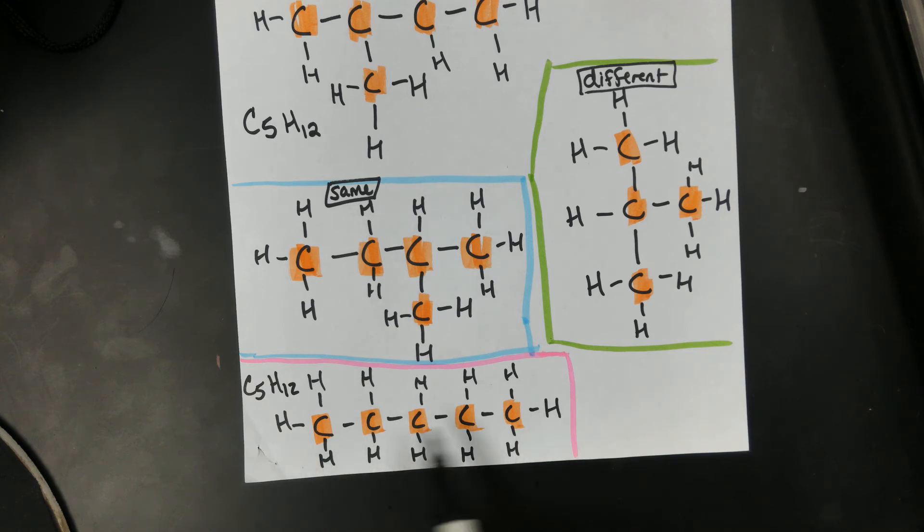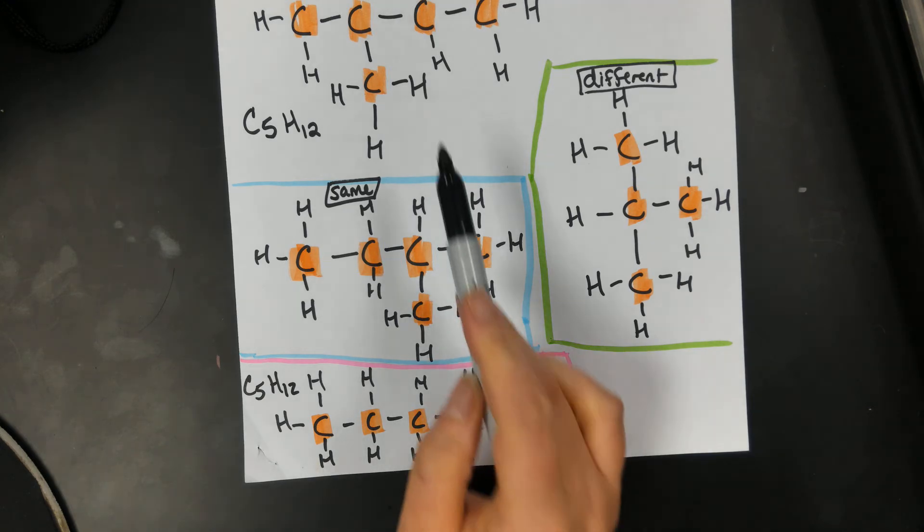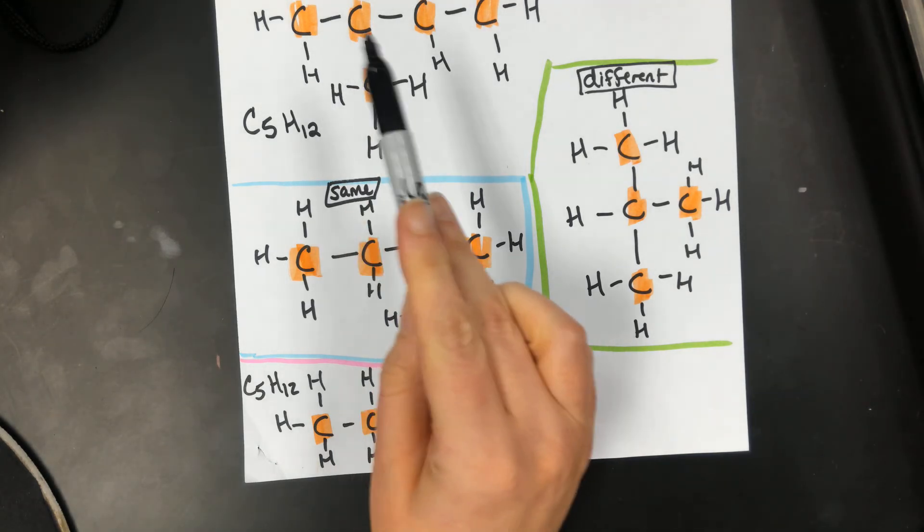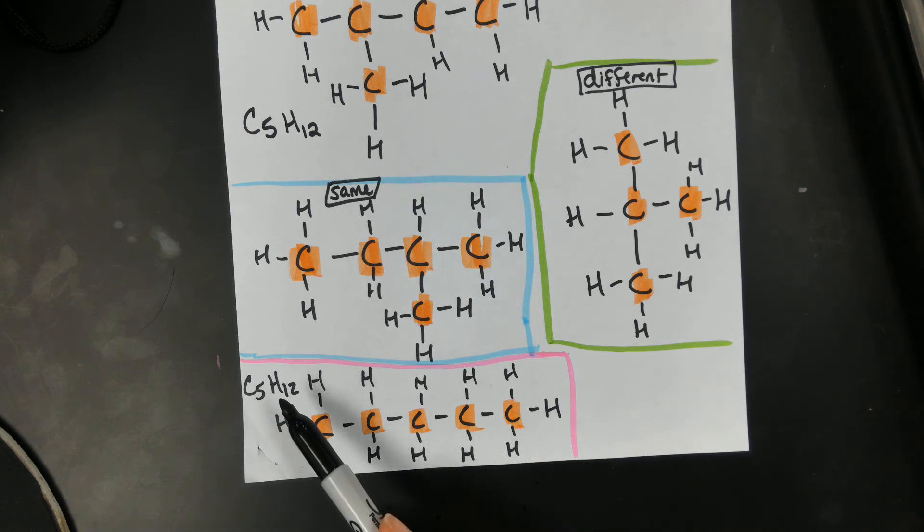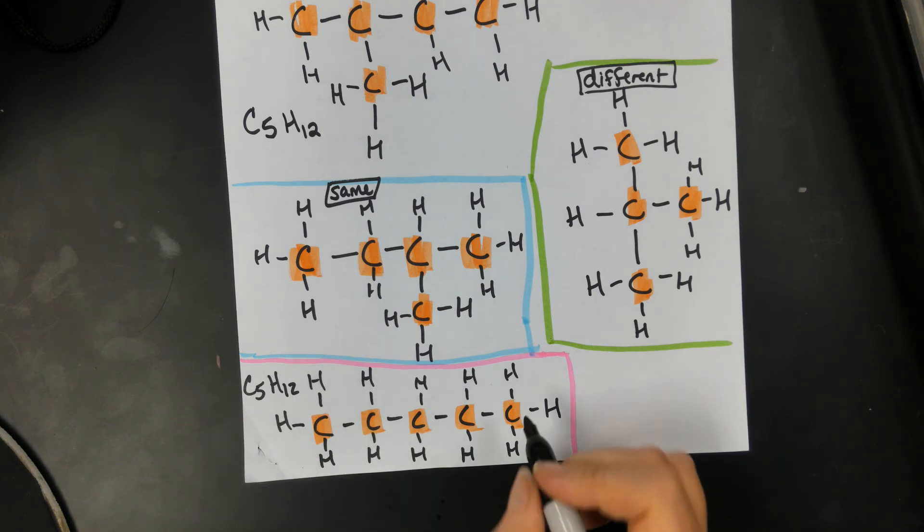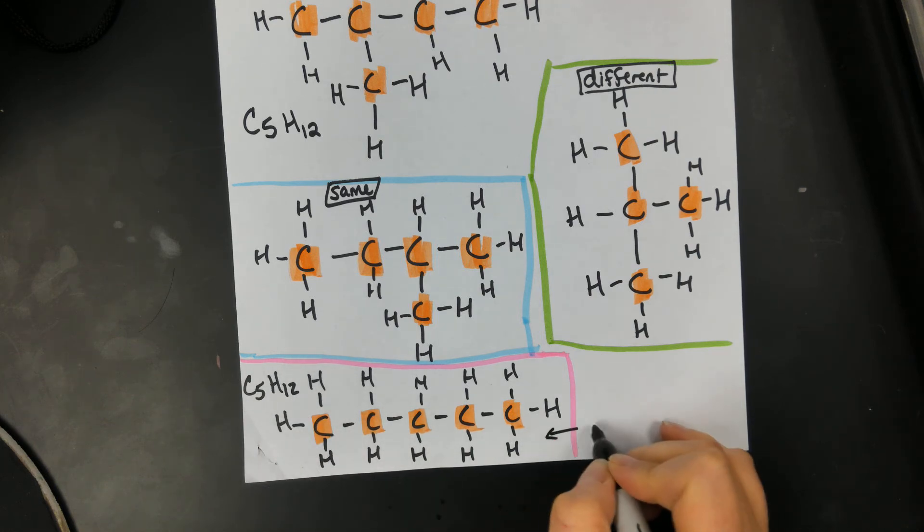The connectivity is different. Why? Because up here you have one small branch. Down here you have them all linked side by side. So the connectivity is different, but the formula is the same. The actual number of carbons and numbers of hydrogens is the same. So this is an isomer.